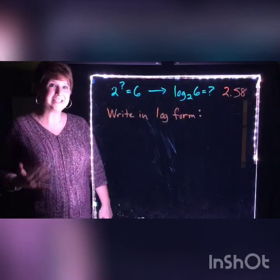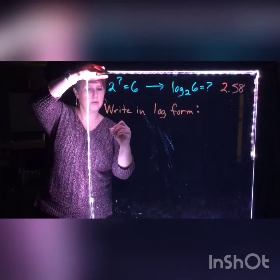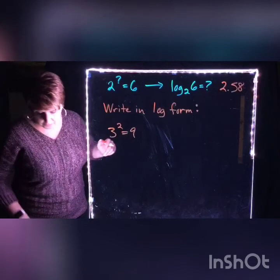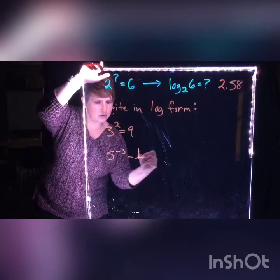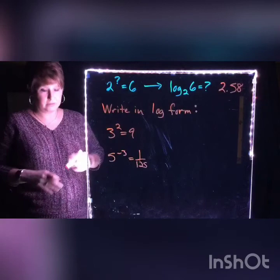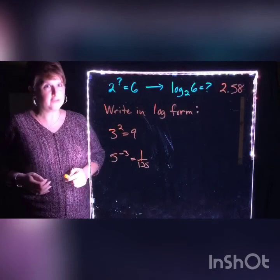We're going to do a little bit of practice going back and forth. I'd like you to take the following things and put them into logarithmic form. In exponential form: 3 squared is equal to 9. We're also going to go with 5 to the negative third power equals 1 over 125. That better make sense — why is it a fraction? Because the exponent is negative.